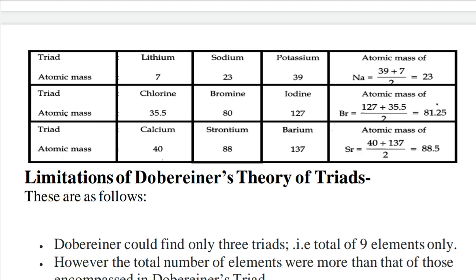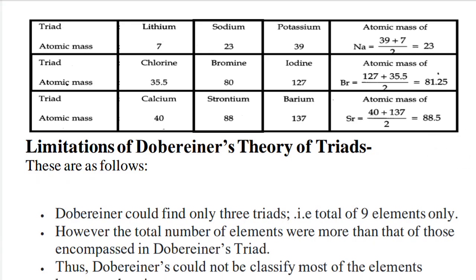Another example: Chlorine (35.5), Bromine (80), and Iodine (127). The mean of Chlorine and Iodine is (35.5 + 127) / 2 = 81.25, which is close to Bromine's atomic mass of 80. Note that the value need not be exactly equal — values close to the middle element's atomic mass are also acceptable.